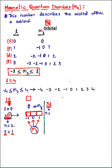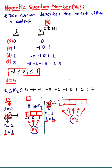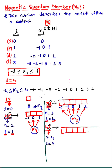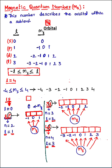For the 3d sub-level, n=3 and l=2. The d sub-level has five orbitals, meaning it can hold a maximum of 10 electrons (two per orbital). Since l=2, m_l ranges from −2 to +2. For the 4f sub-level, n=4, l=3, and it has seven orbitals, so m_l varies from −3 to +3.